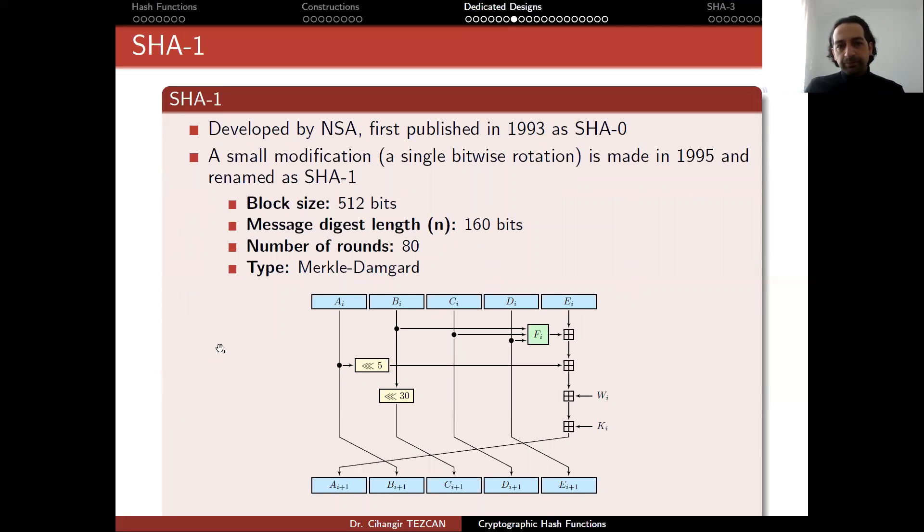Now let's move on to SHA-1. This is developed by NSA and was first published in 1993. But then they made a small modification. So for this reason, the initial version is referred to as SHA-0, and the original version with this small modification, which is done in 1995, is now known as SHA-1. I'm not sure, but maybe there wasn't a rotation here. They added this one. And if you don't add this single bitwise rotation, then the algorithm becomes really weak, by the way.